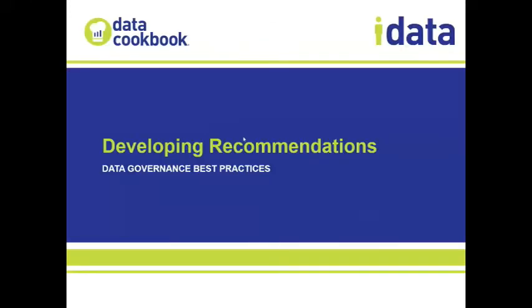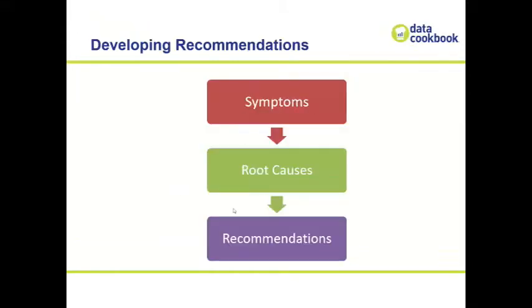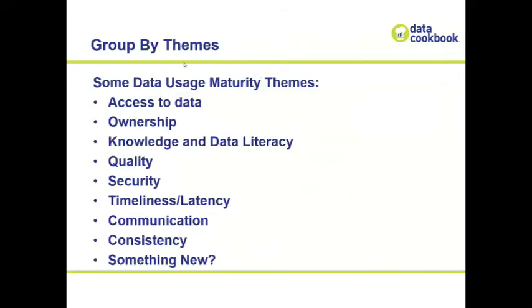Once you have that assessment done — the raw input from people about what's working — you can start developing recommendations. Take what people say about the symptoms: the challenges standing in their way of using data. Look for root causes and come up with recommendations. Common themes include access to data, ownership, data literacy, data quality, security, and timeliness. Occasionally something new comes up like accessibility from a disability standpoint — not a common theme, but potentially very important.